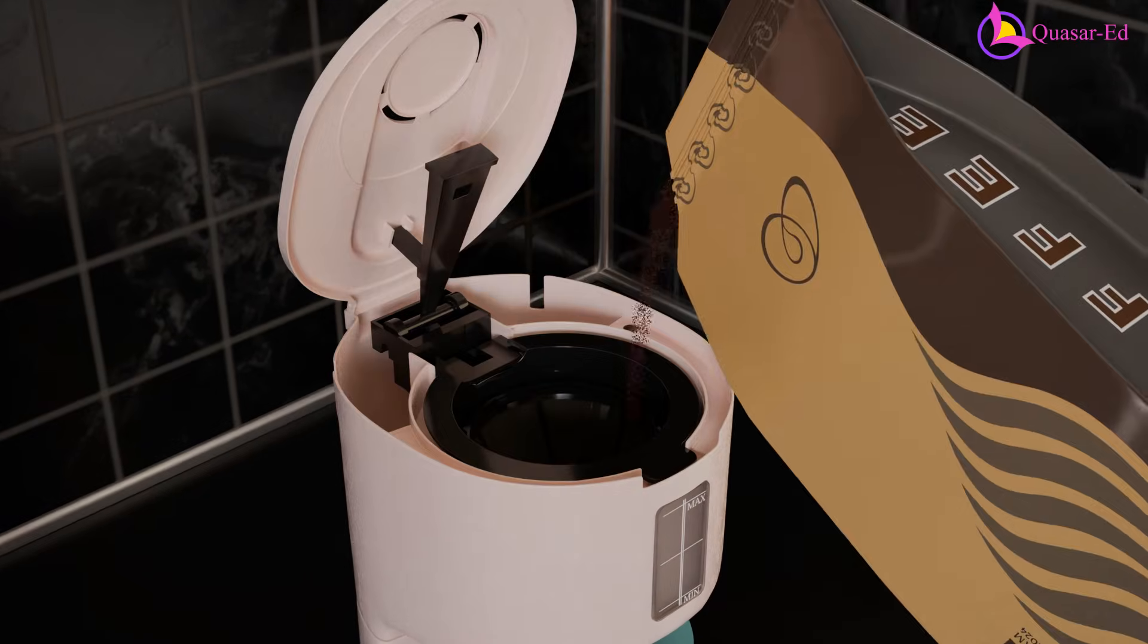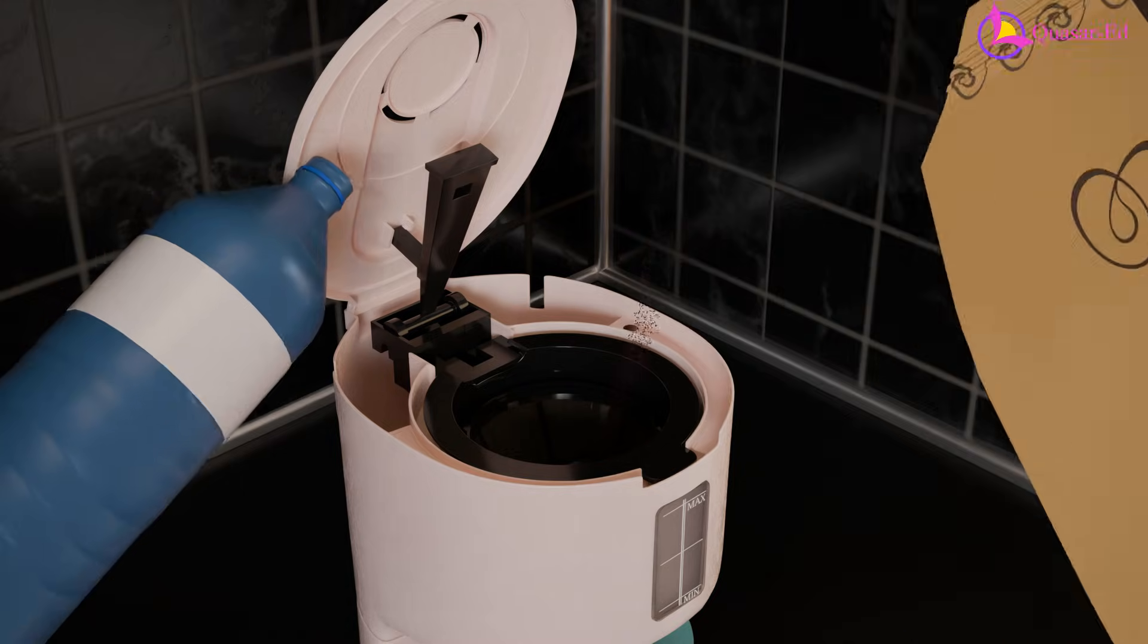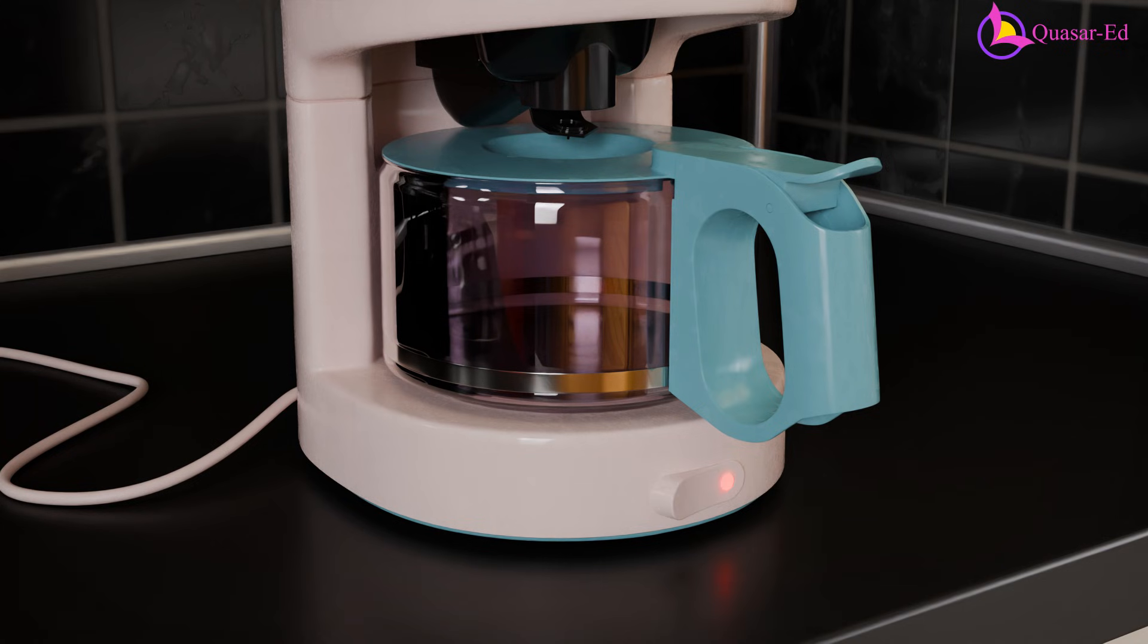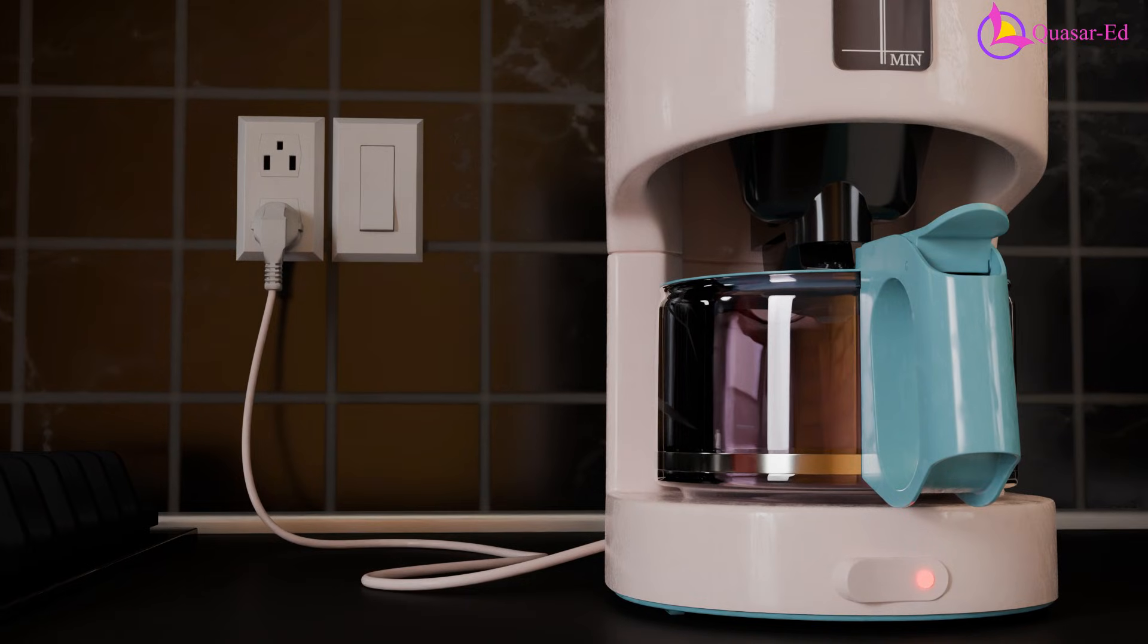Open the lid, add your coffee grounds to the filter, fill the water reservoir, and flip the switch at the bottom. And of course, don't forget to plug it into the wall outlet.